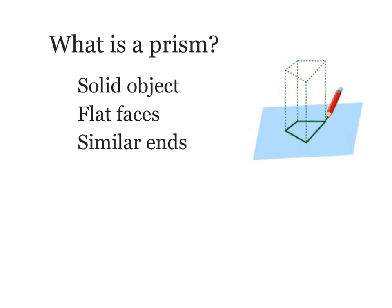A prism is a three-dimensional shape. It's a solid object that has flat faces and similar ends or bases. So solid object, flat faces, similar bases.